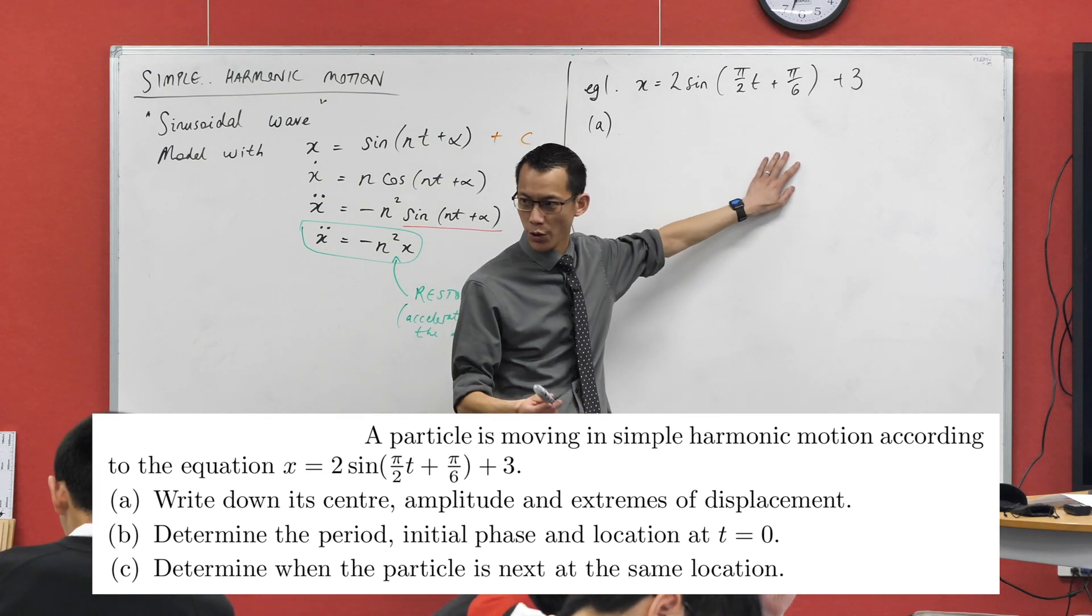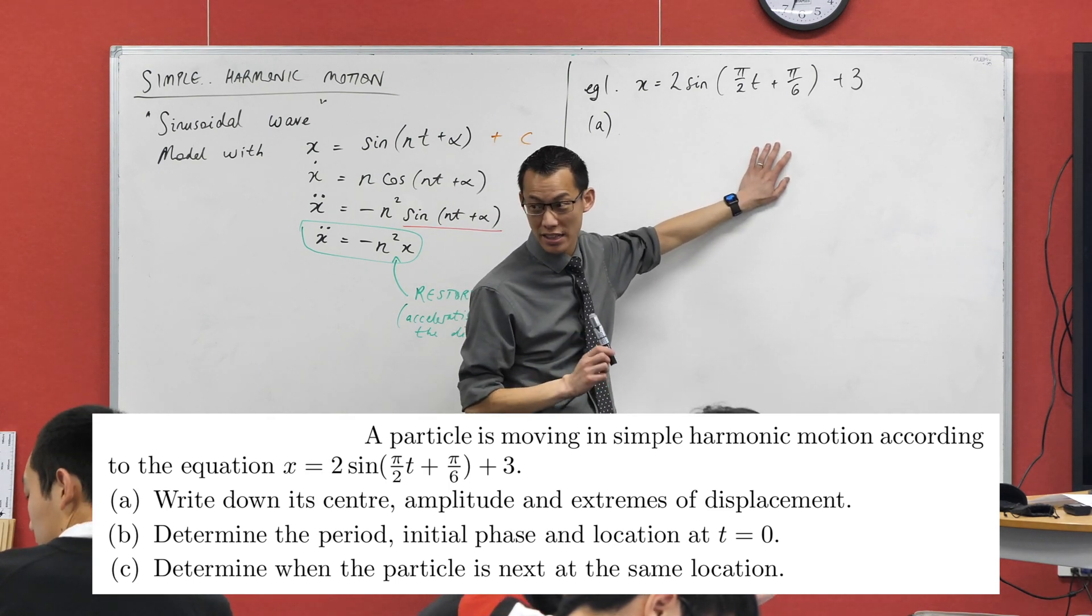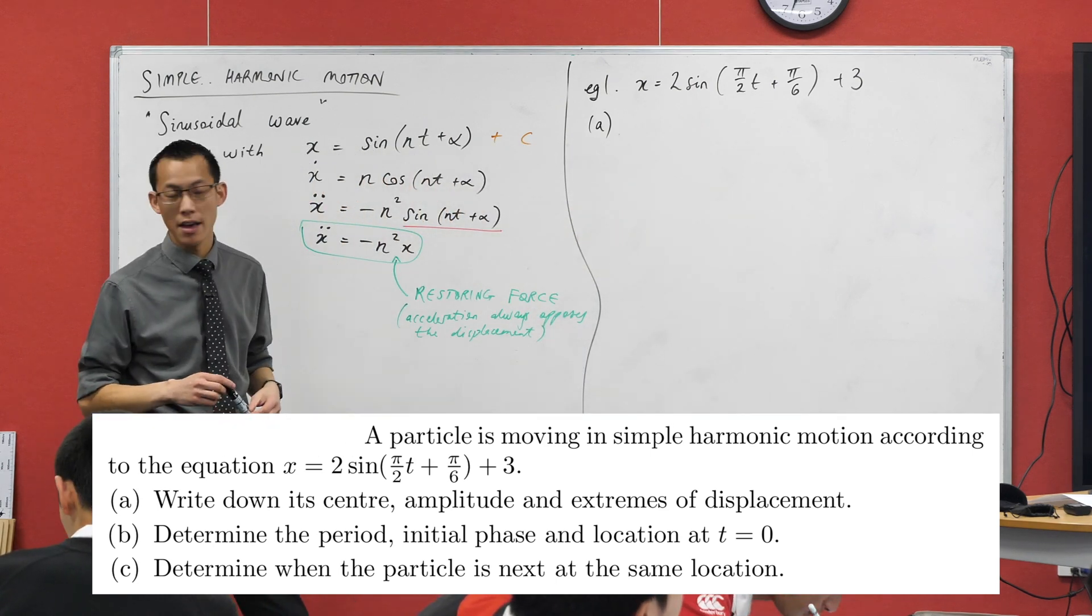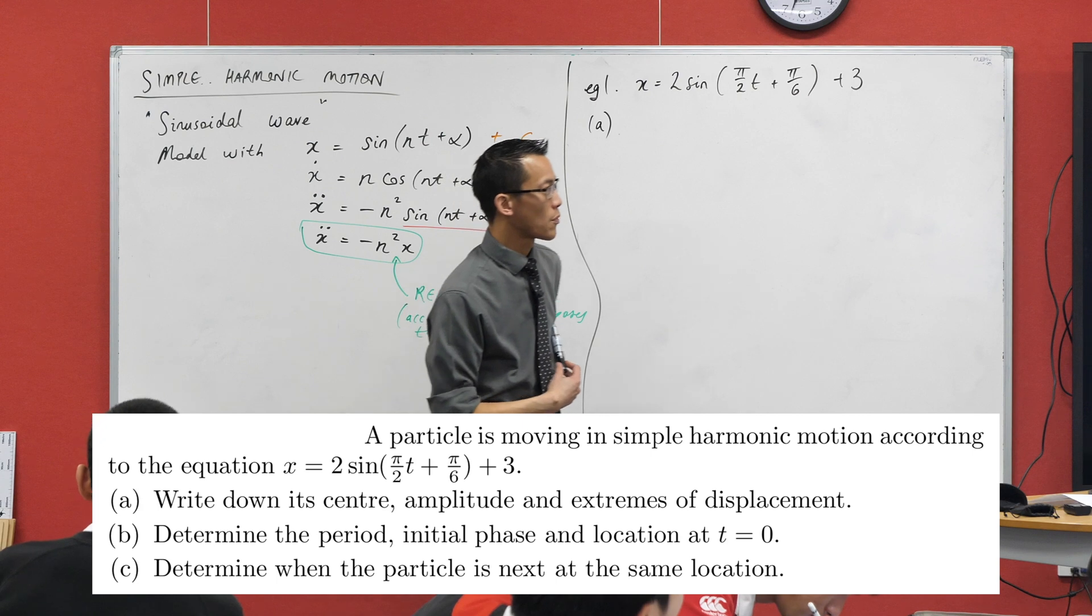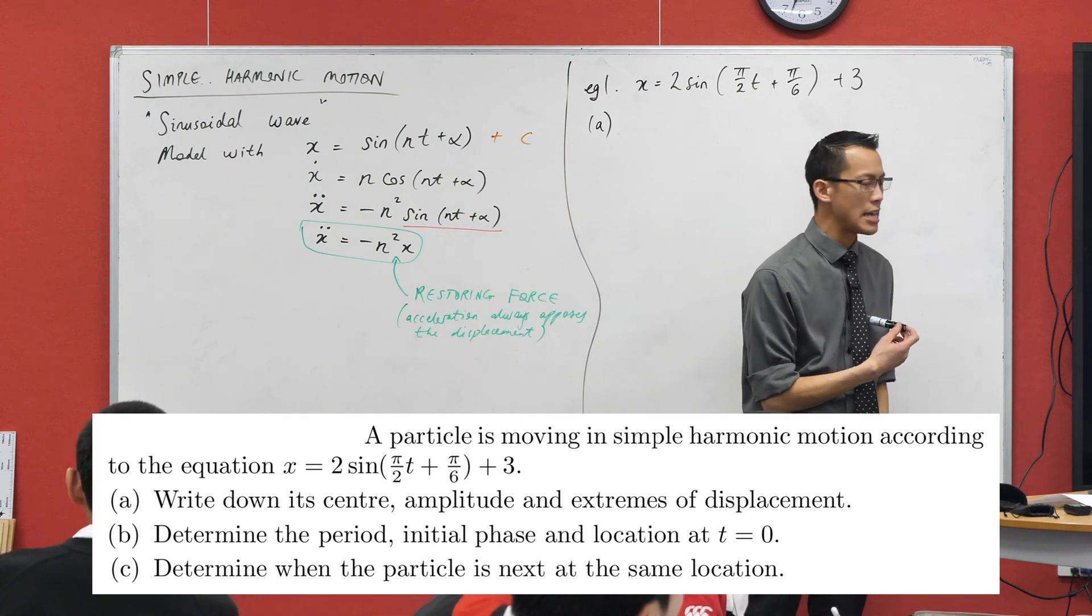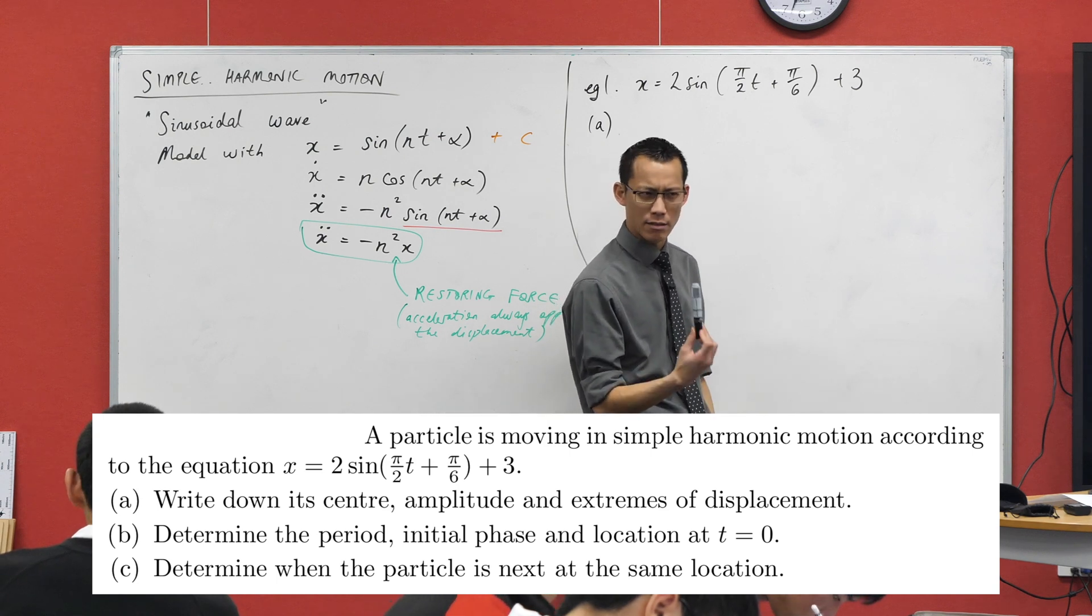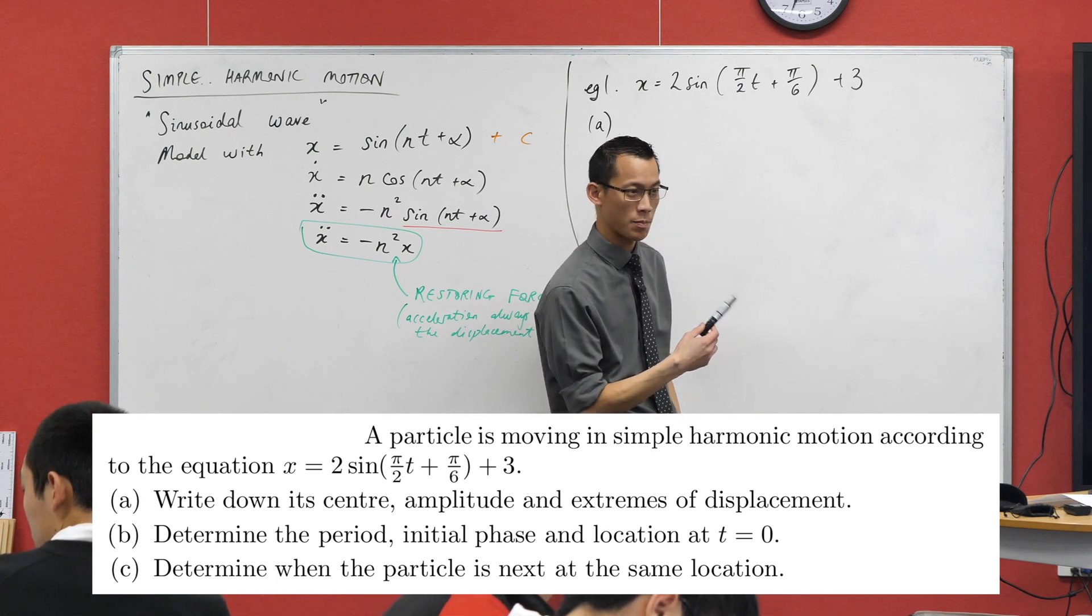I've just written down the equation. Believe it or not, we can get pretty much everything we need just off of this. What are the first things that are asked of us? It says, write down its center, amplitude, and extremes of displacement. That's a bit of a weird phrase, but you might be able to infer what that's asking for just by the language.